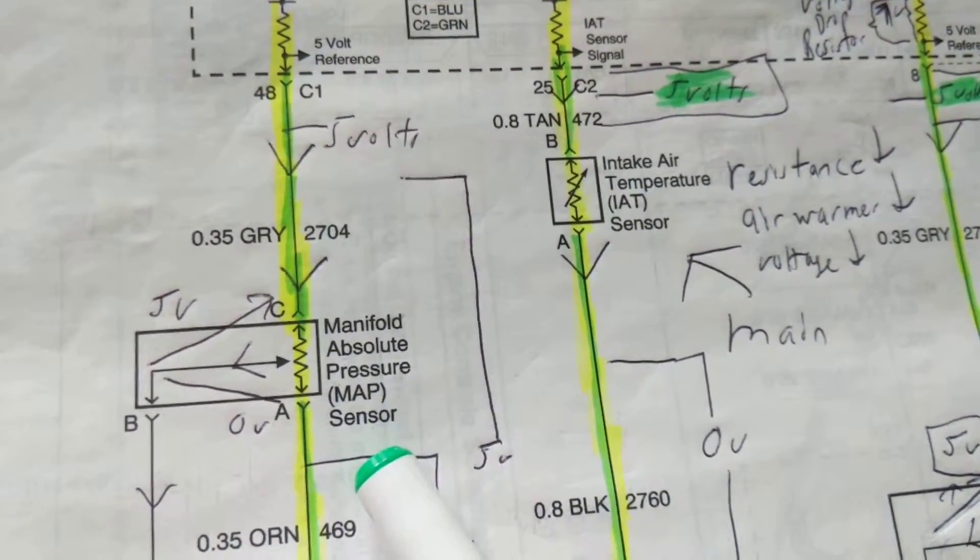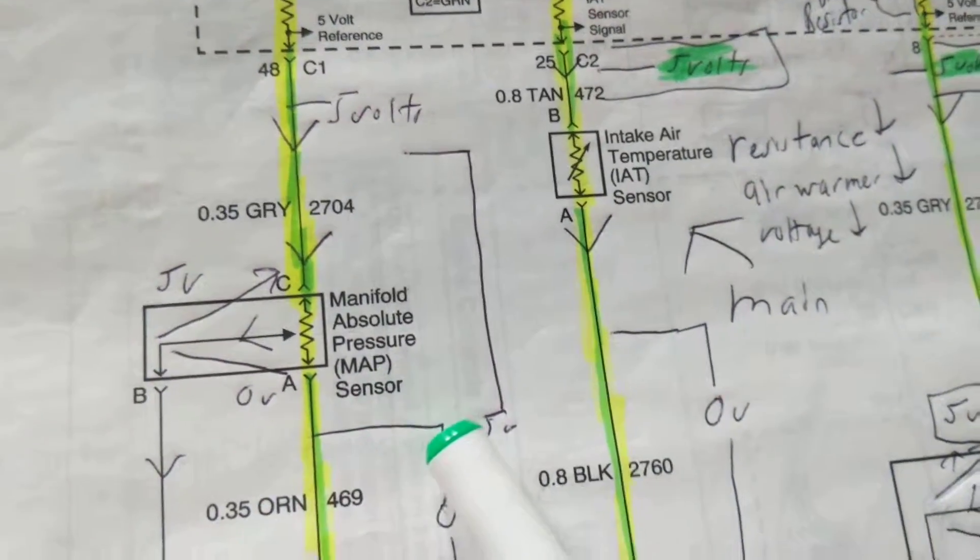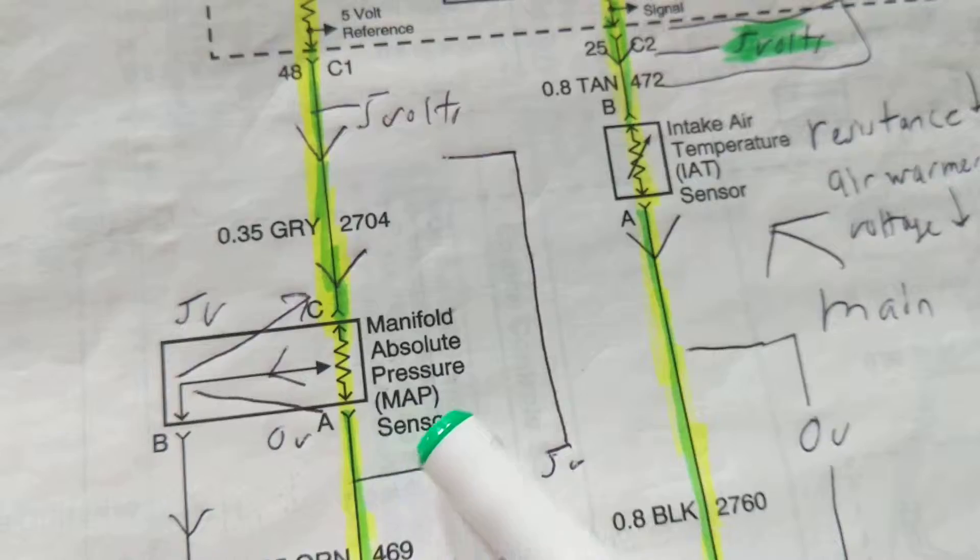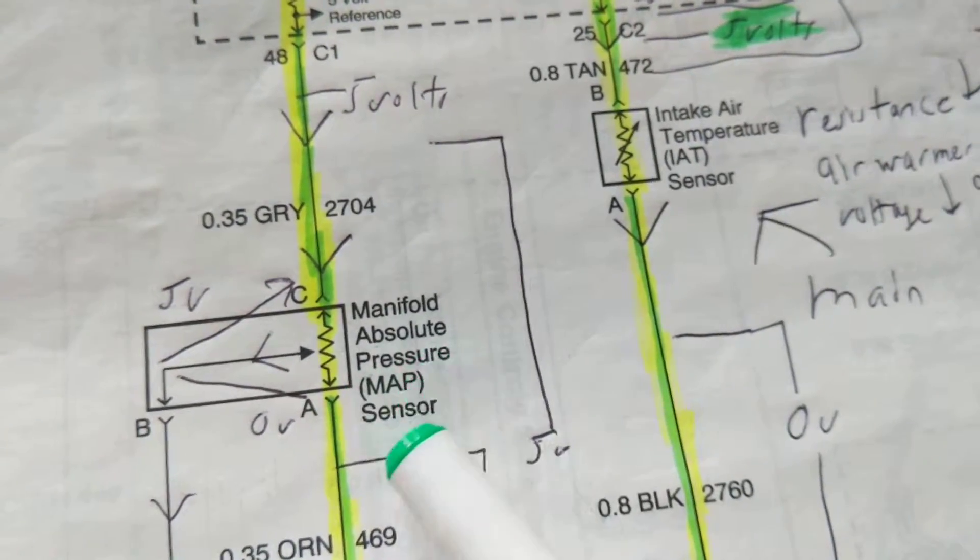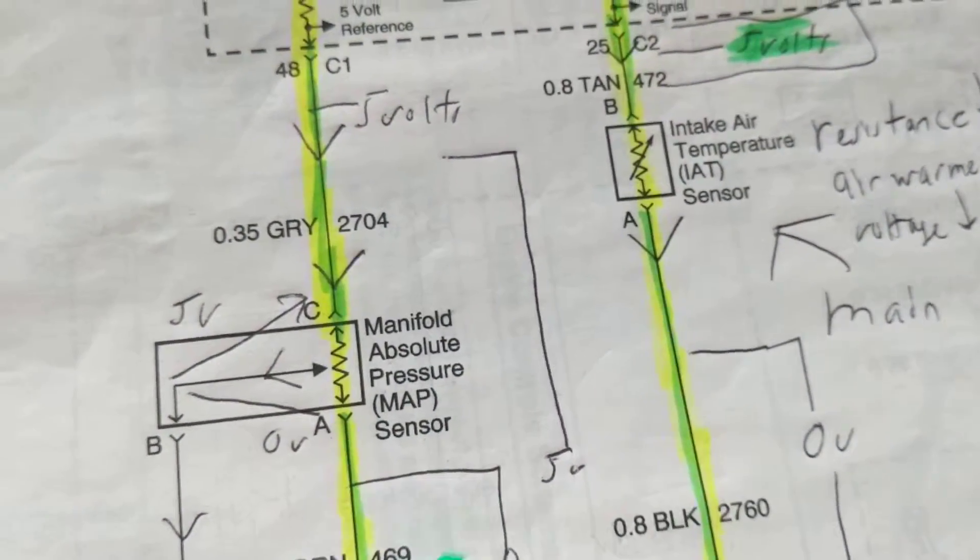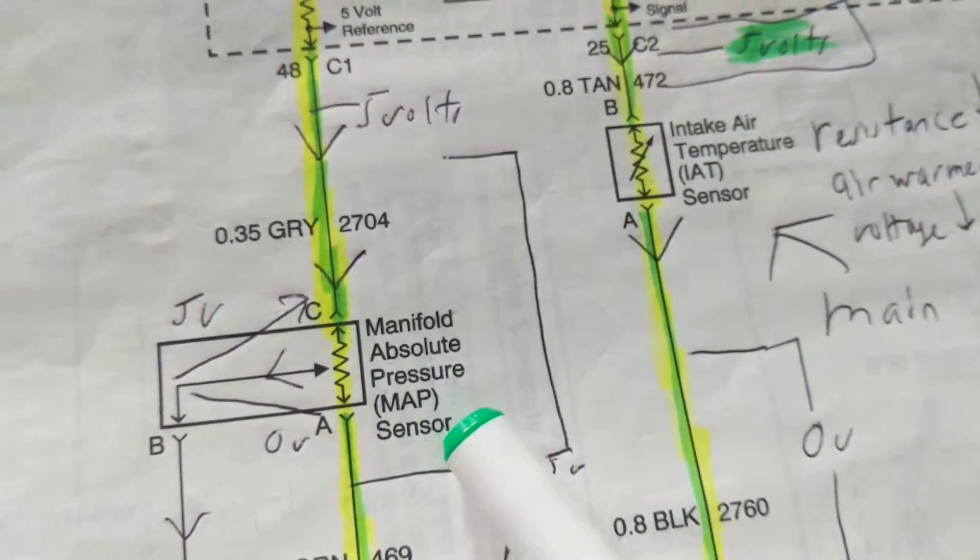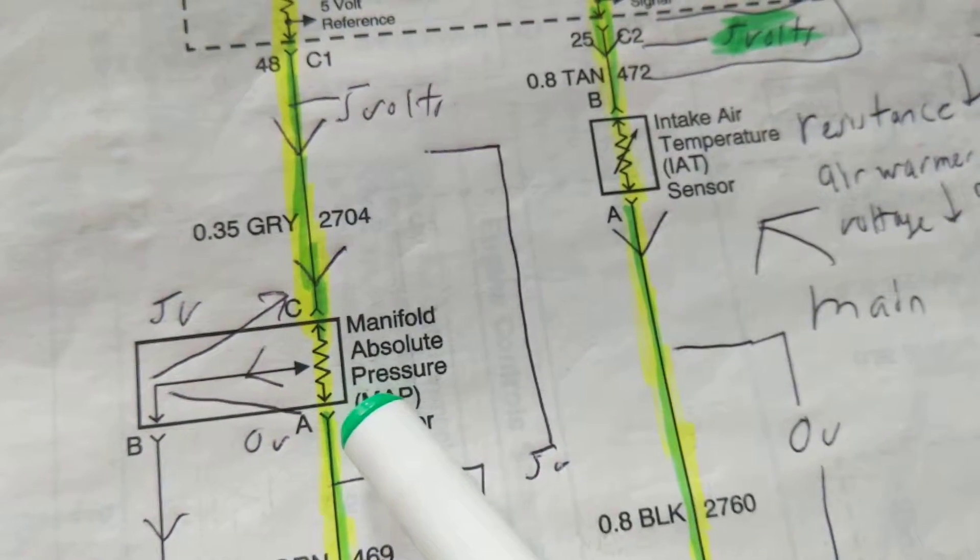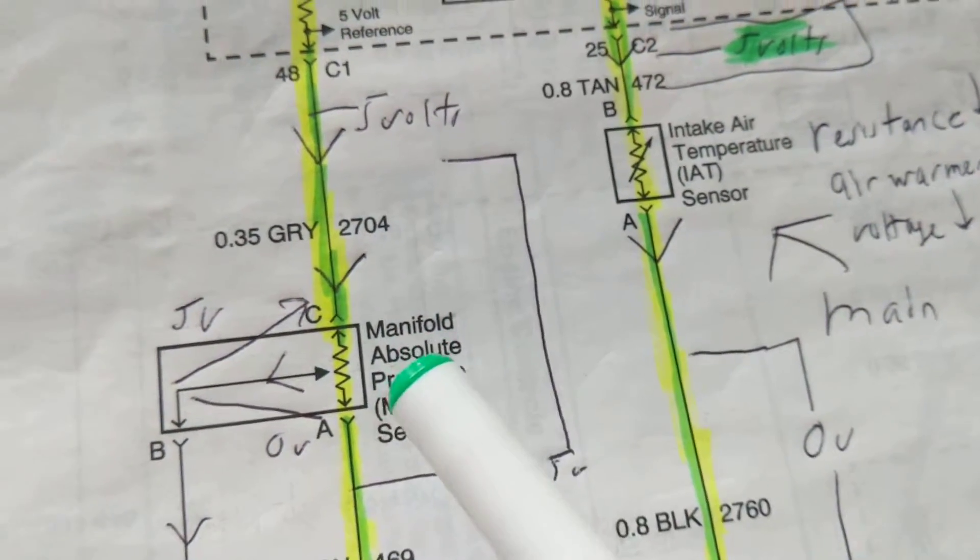Manifold absolute pressure sensor has to do with vacuum that's in the engine. According to vacuum, it knows how much it's open and it understands the load conditions. When you open up the throttle, the vacuum changes inside as opposed to the atmospheric pressure outside.